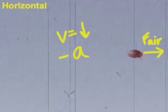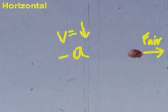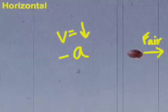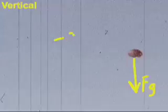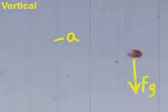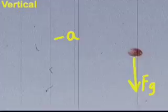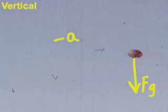Therefore, the acceleration in the horizontal direction is negative. In contrast, in the vertical direction, the velocity will be changing, but the acceleration will be a constant negative 9.8 meters per second squared, which is the acceleration due to gravity.